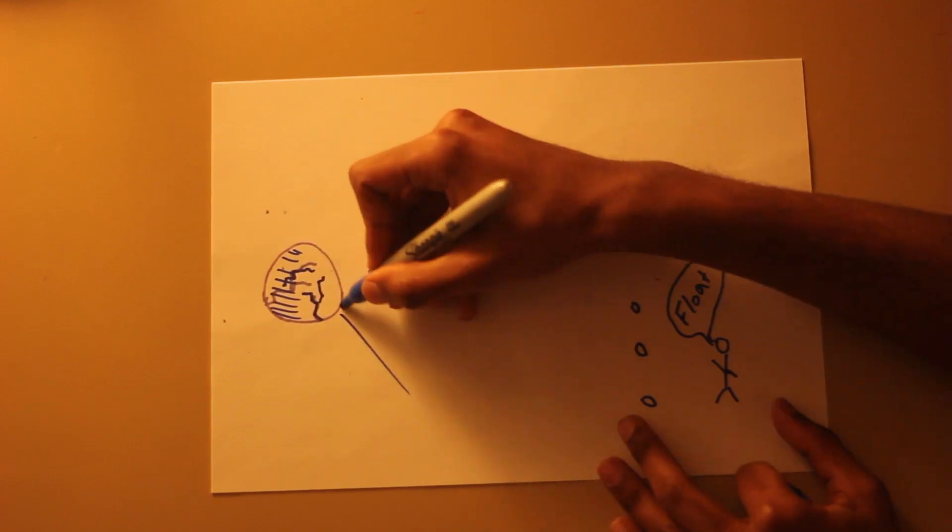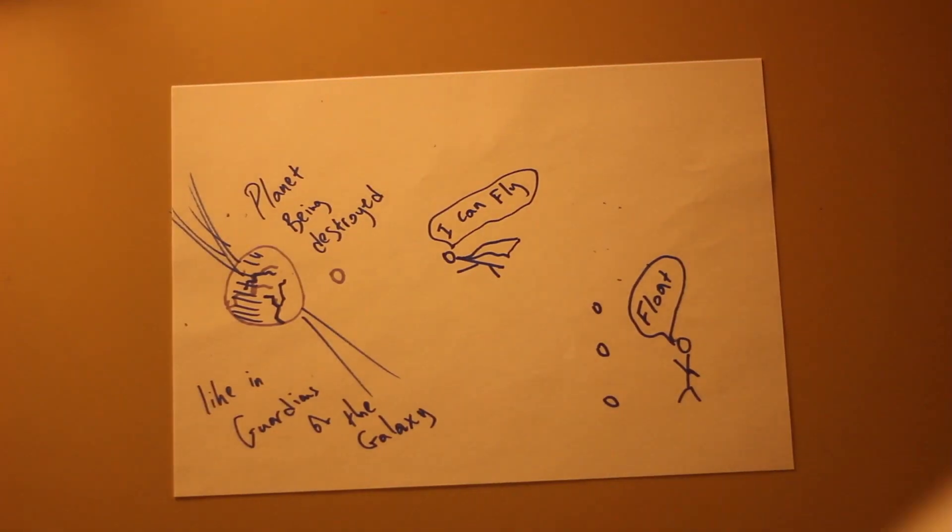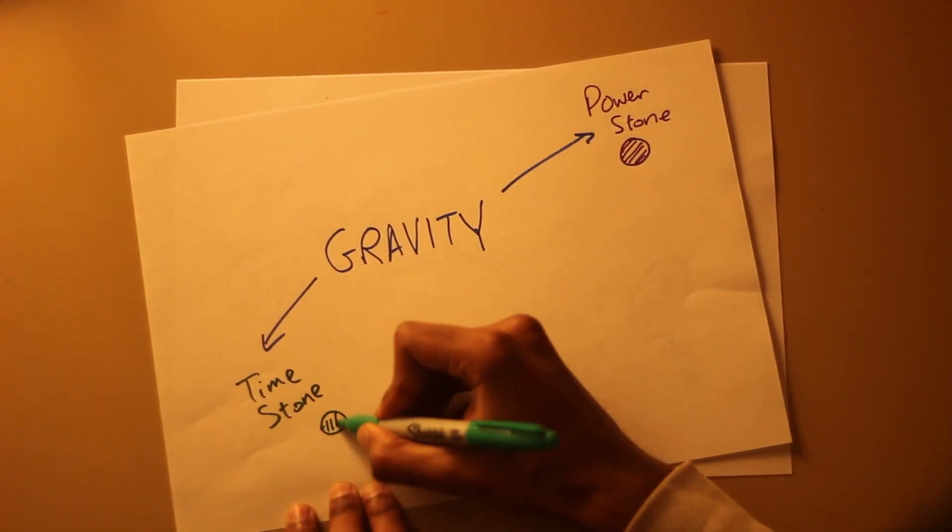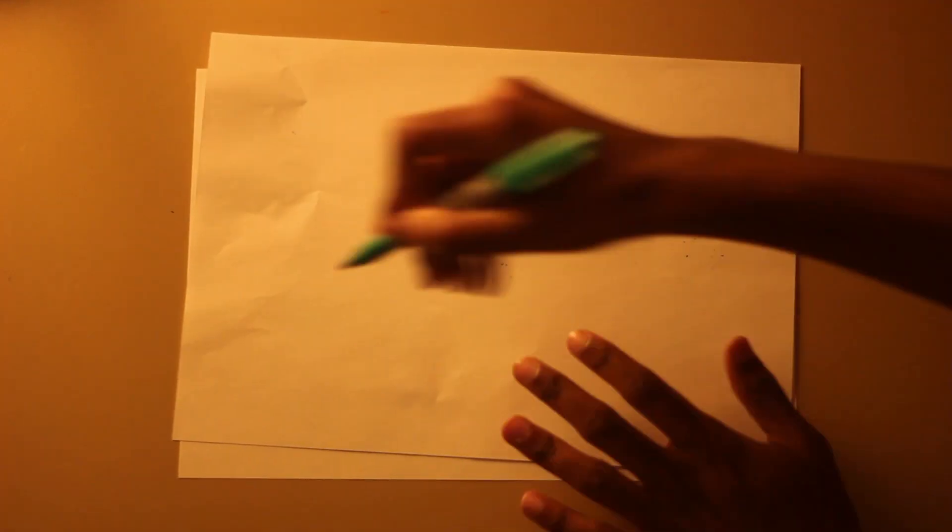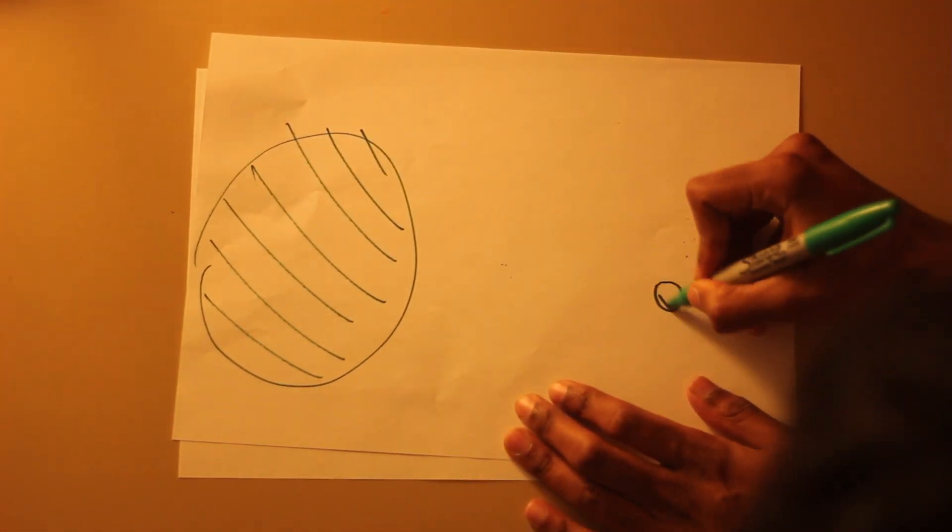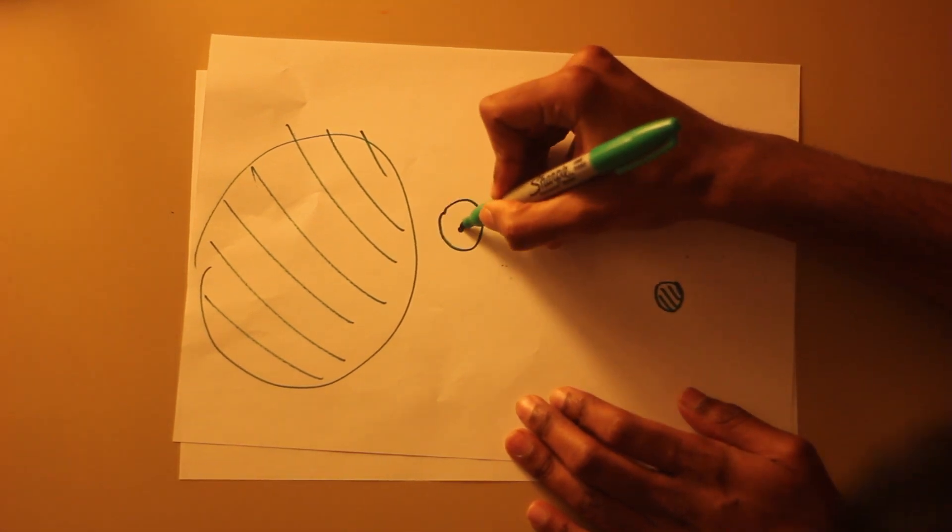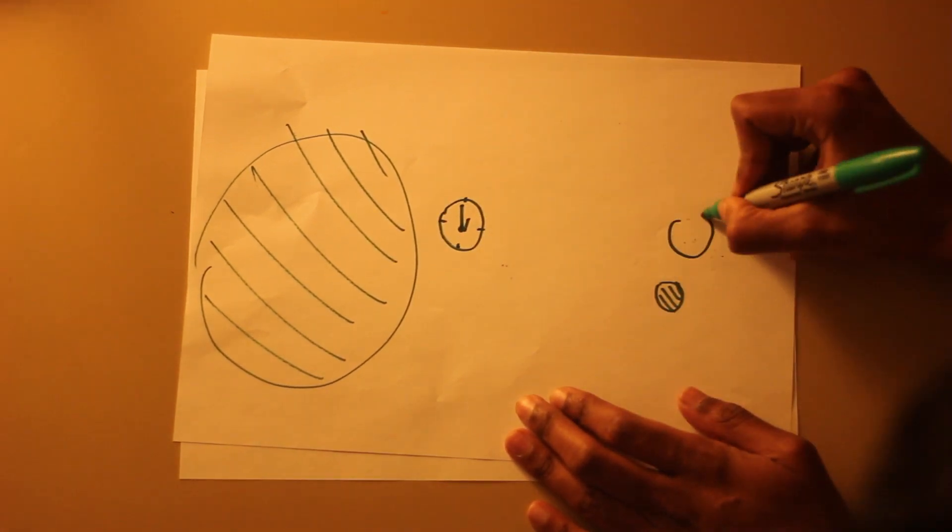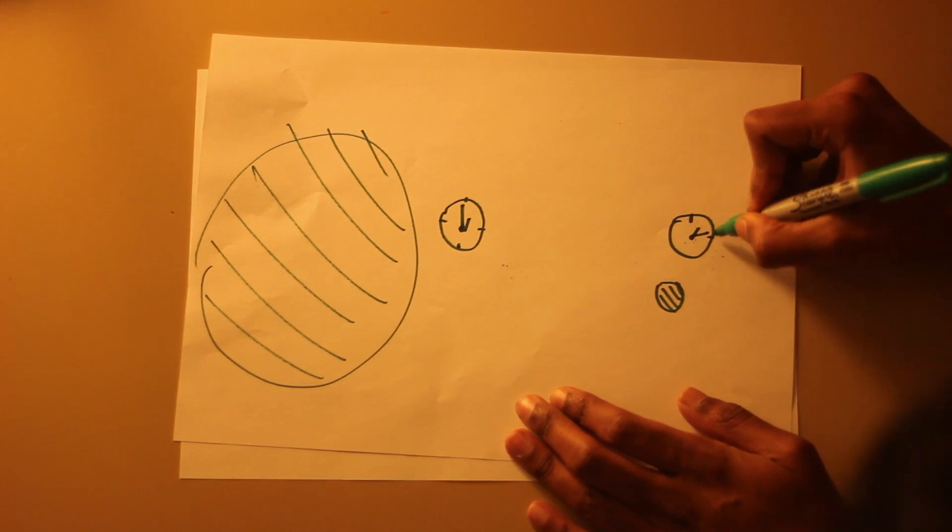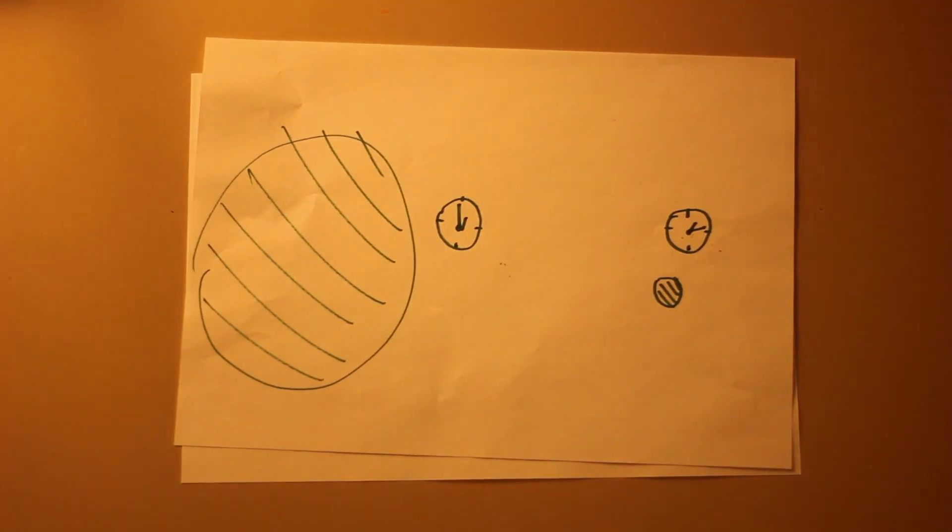Another thing with controlling gravitation is you might also be able to control an aspect of time. Einstein's theory of general relativity tells us that the stronger the gravitational force around an object is, the slower time ticks there relative to far away. So yeah, you could age things if you could control gravity.